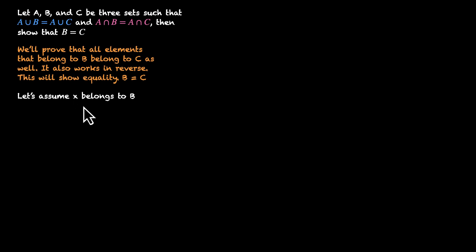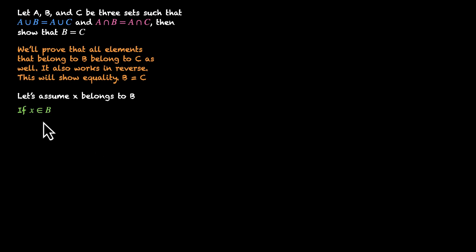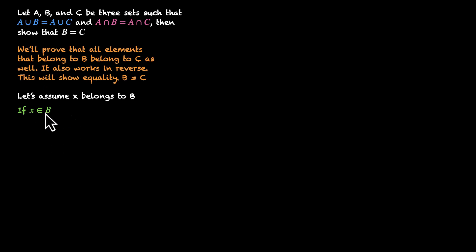Let's assume that an element x belongs to B. If x belongs to B, we can write A union B. If x belongs to B, then x also belongs to A union B — in fact, it belongs to anything that has a union with B.